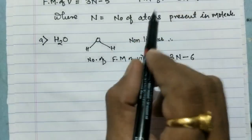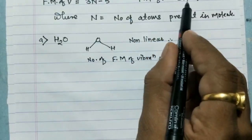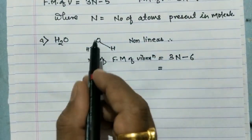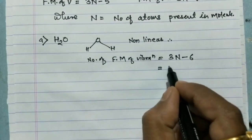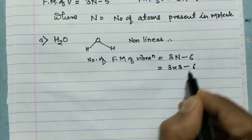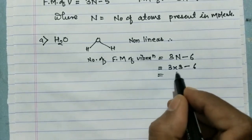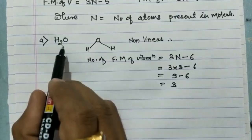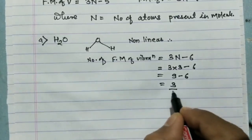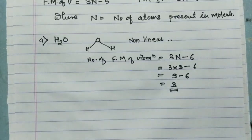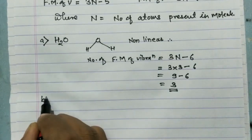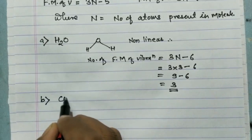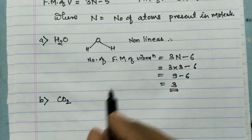Since H₂O is a nonlinear molecule, the formula is 3n − 6. Putting n = 3: 3 × 3 = 9 − 6 = 3. So water has three fundamental modes of vibration. Now suppose the second molecule is carbon dioxide — the structure of CO₂ is linear.